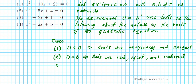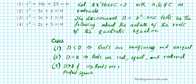Case number three: what if the discriminant is positive and also a perfect square? If the discriminant is positive and a perfect square, then the roots are going to be real. If the discriminant is zero or greater, it's always going to be real, because you're taking a square root of either zero or a positive number. The roots are going to be real, unequal, and rational.